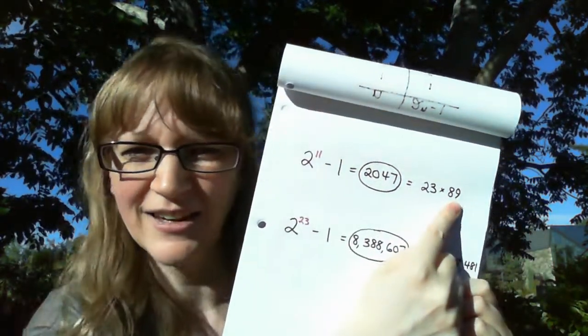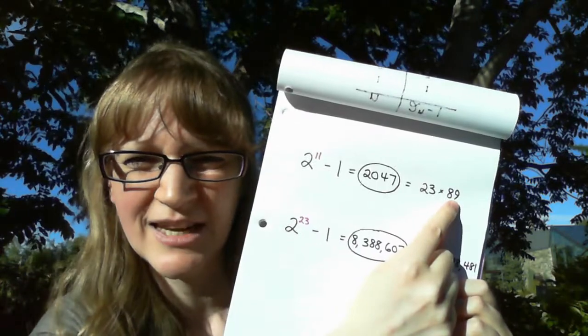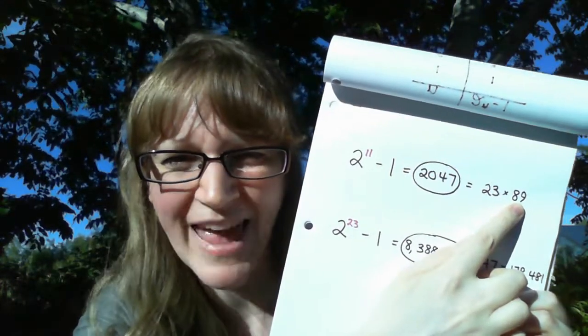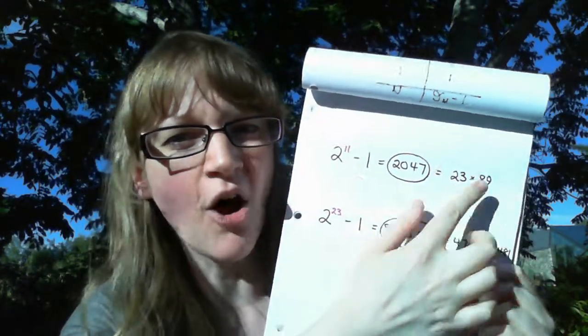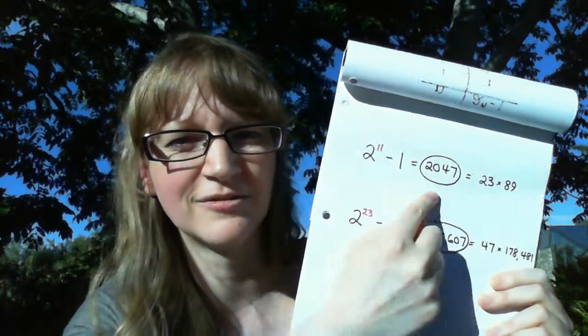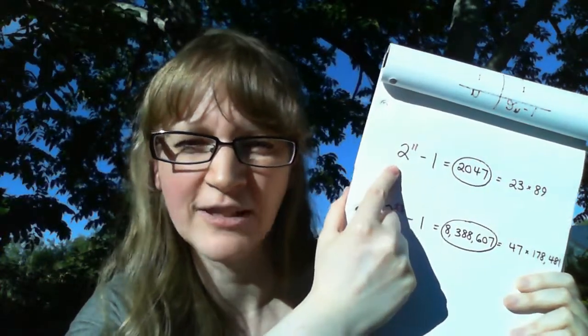Likewise, 89 as a prime number divides 2 to the power of 88 minus 1. It also somehow collapses down and divides 2 to the power of 11 minus 1.